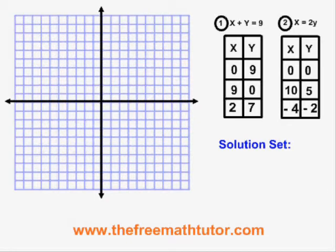The next step is to put the dots for the two lines onto the graph and then draw the lines. For equation 1, the point 0, 9 will be here. The point 9, 0 will be here. And the point 2, 7 will be here. Drawing a line through these points, I end up with my equation 1 looking like this on the graph.